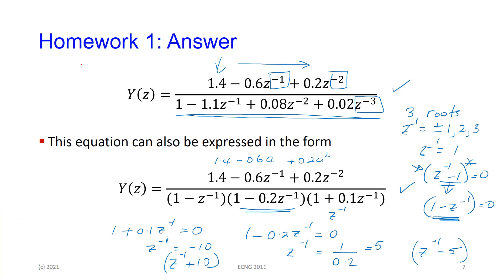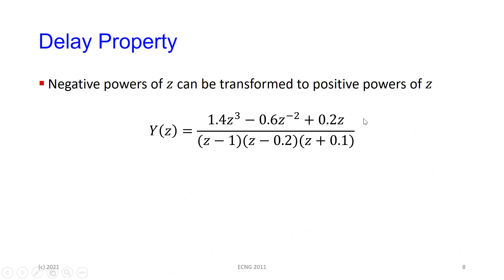You could also rationalize the expression with positive indices. If I wanted to convert the upper one into positive indices, I can multiply this by Z cubed over Z cubed. You look at whatever the highest negative index is, and that positive version would be the value you need to multiply by. So you could convert that into positive powers of Z.